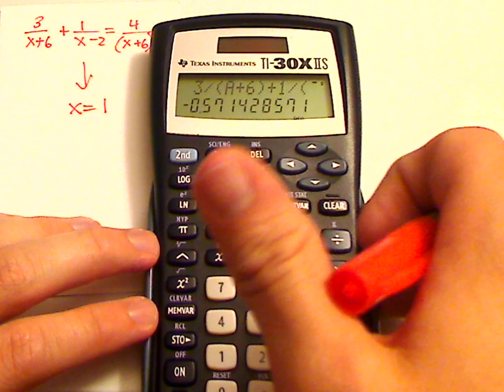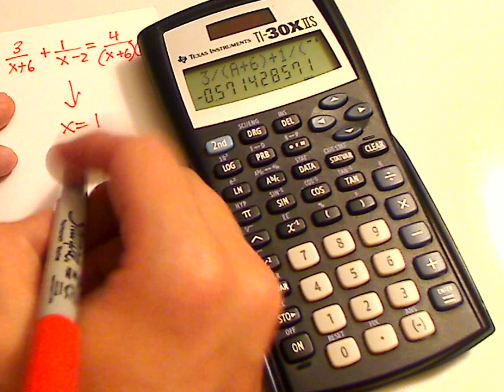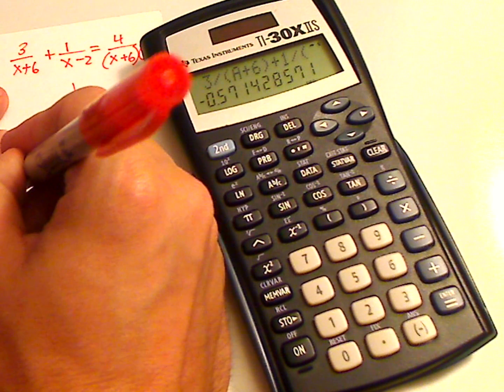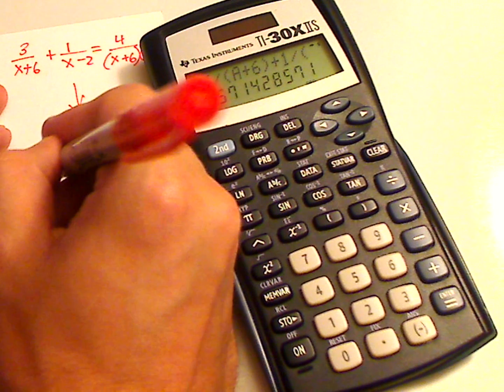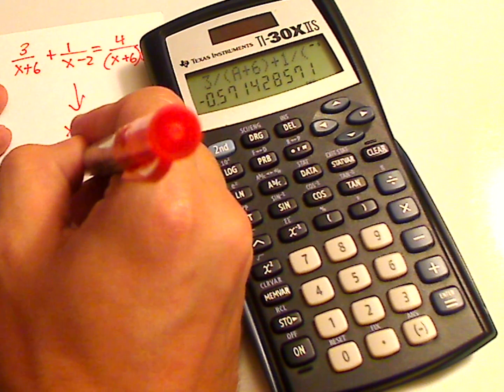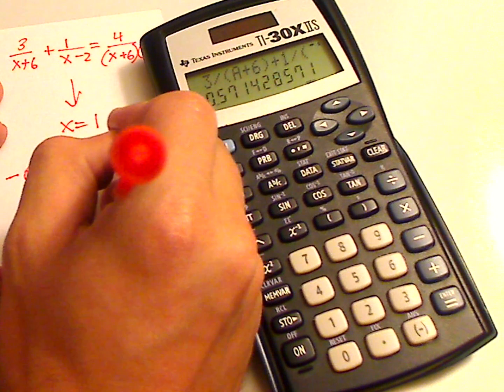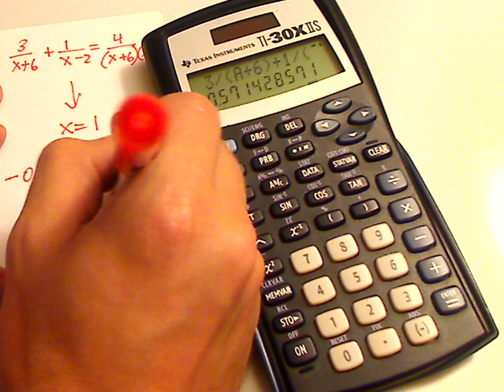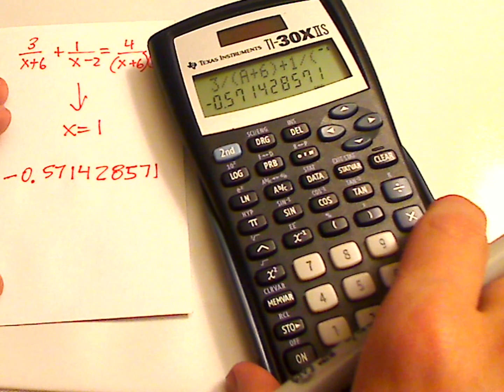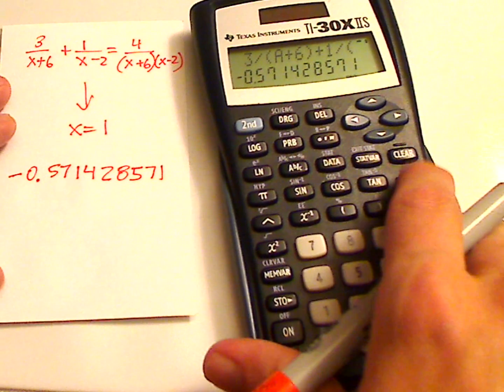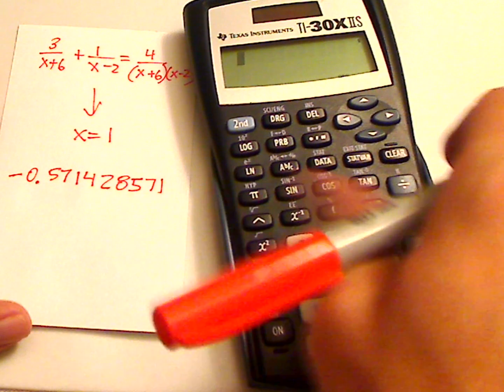And you get some crazy number. You could write it down. That's probably what you should do. So minus 0.5714285571. Just type it all out. And then clear.